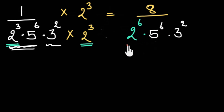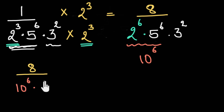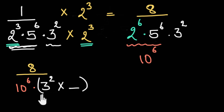Now, 2 to the power 6 and 5 to the power 6 combine to give 10 to the power 6. So this rational number becomes 8 divided by 10 to the power 6 times 3 squared. But there is no integer we can multiply with this 3 squared to get a power of 10. And if we don't have a power of 10 in the denominator, we can never change this rational number into a terminating decimal. The only other possibility is that its decimal expansion would be non-terminating and recurring.